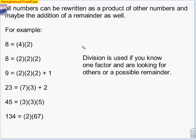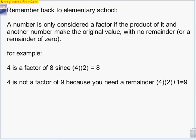Usually when we start these problems, we know what one of the factors is — we're just trying to see if we can find more. Remember back to elementary school: why is 4 a factor of 8? Simply because 4 times 2 is 8, meaning 4 goes evenly into 8 with a remainder of 0. 4 is not a factor of 9 because you need a remainder — 4 times 2 makes 8, but you need that extra plus 1 to make the 9.